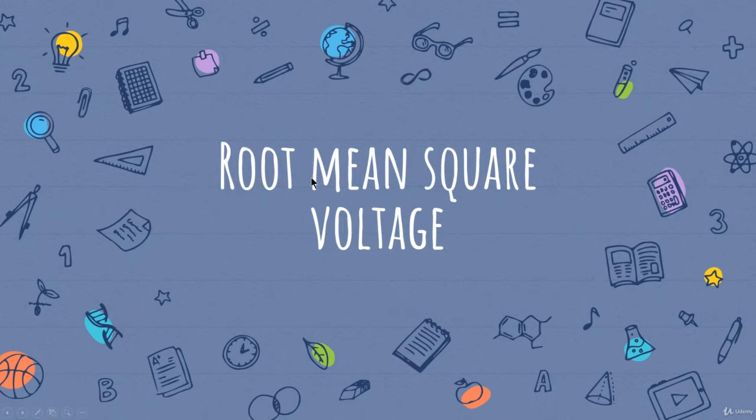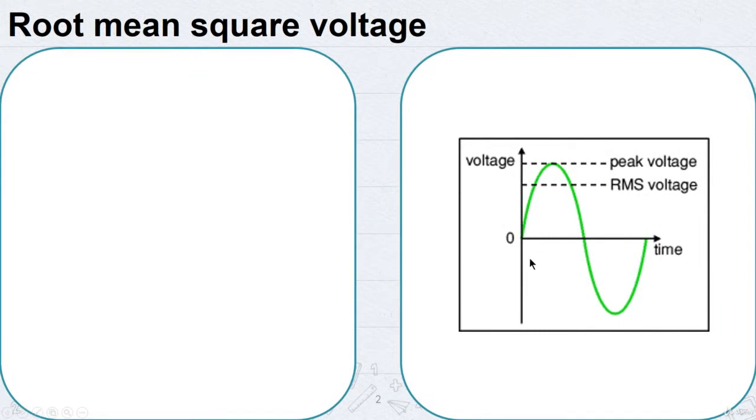You might have probably heard about root mean square voltage. We have this sine wave here, and we know that the value of an AC voltage is continually changing from 0 up to the positive peak, through 0 to the negative peak, and back to 0 again.